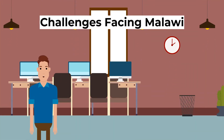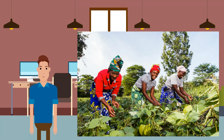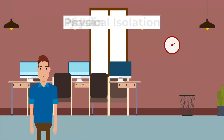Malawi faces several challenges before it can improve its level of development long term. Firstly, looking at climate: Malawi's economy relies heavily on agriculture, meaning the climate is extremely important for its development. The environment is already under stress — intensive farming strips soils of nutrients and increases soil erosion. On top of this, Malawi is experiencing the impacts of climate change, with farmers seeing reduced rainfall and longer heat waves, contributing to crop failures and widespread food shortages.